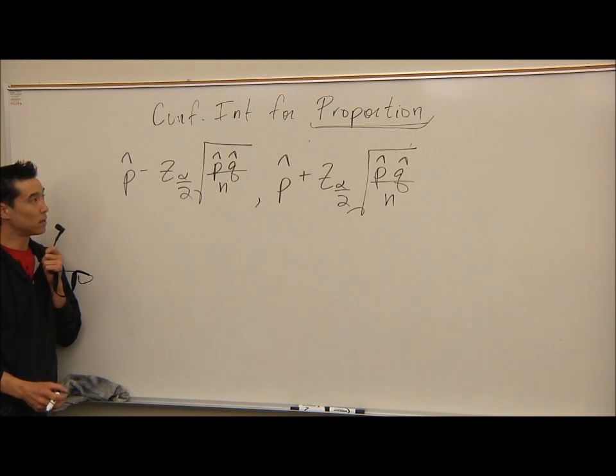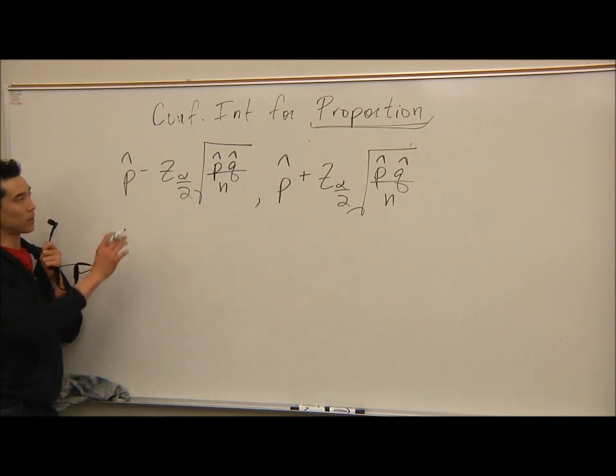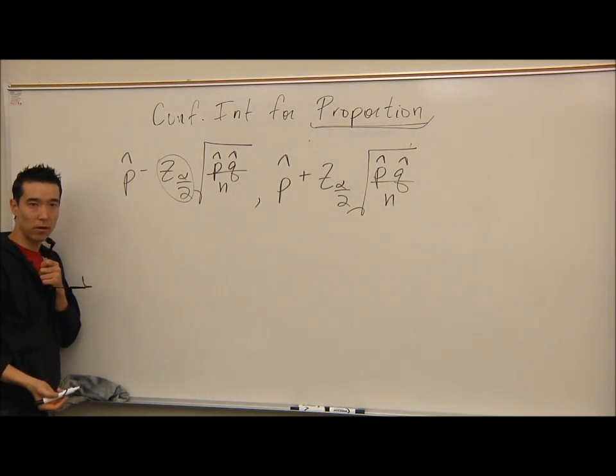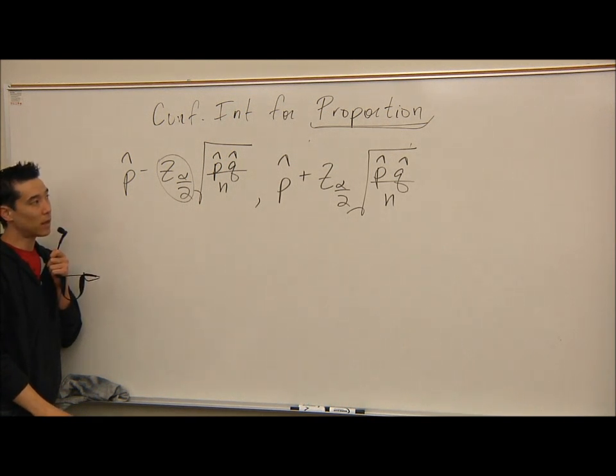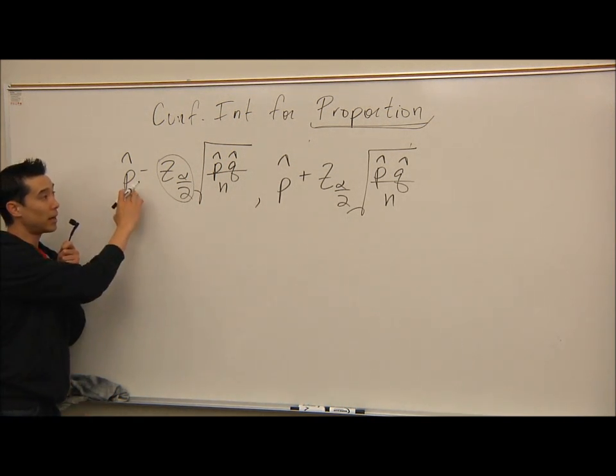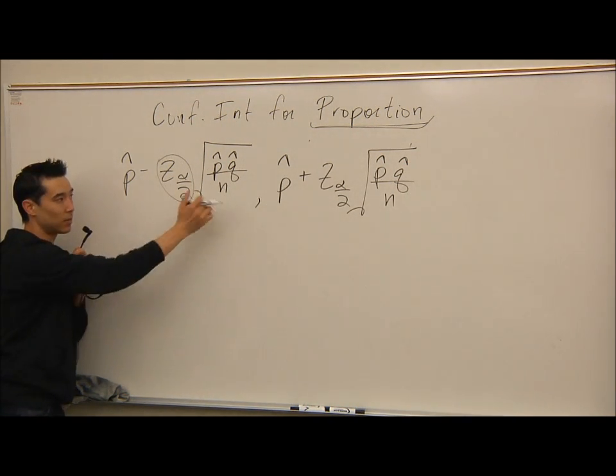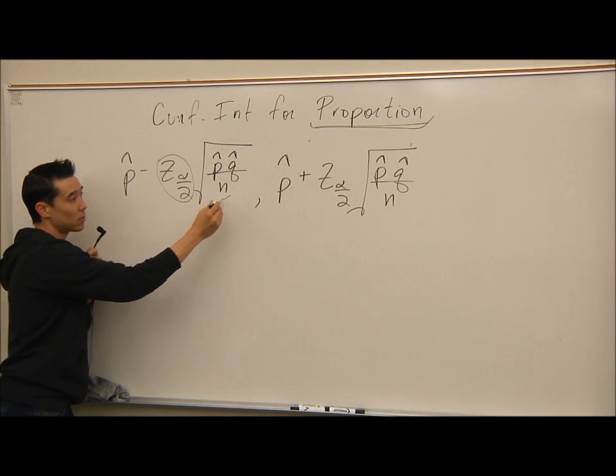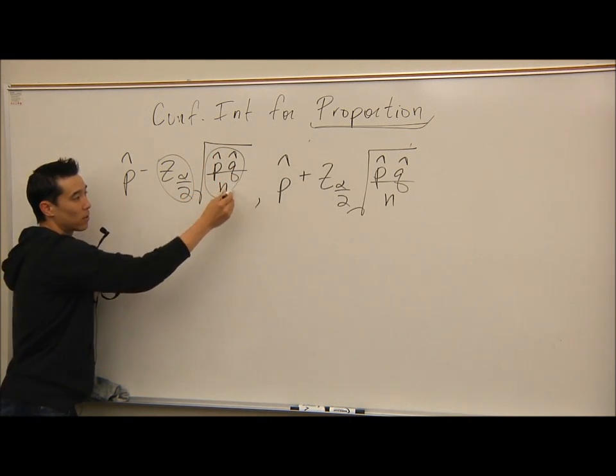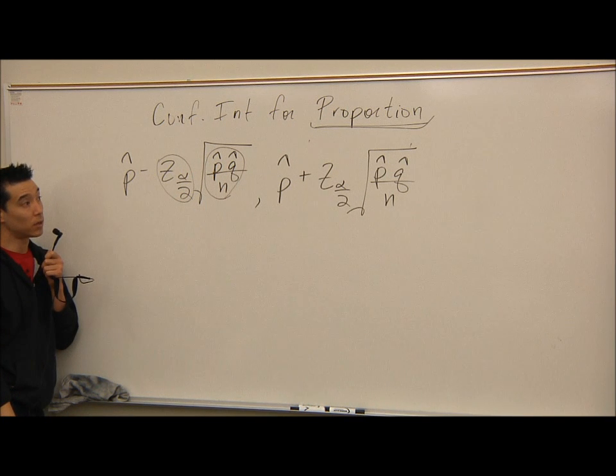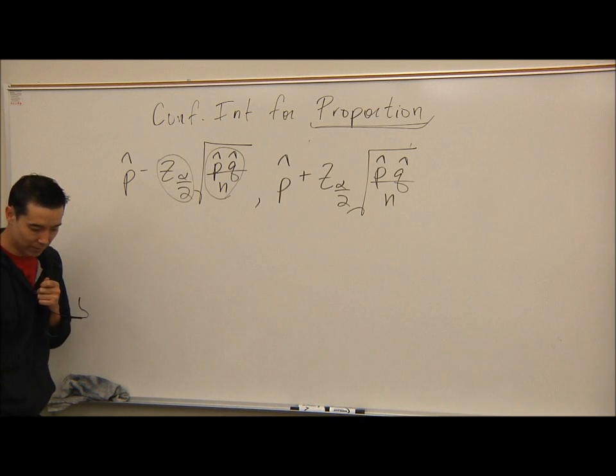We have good news and bad news. Z sub alpha over 2 is familiar to us because we've done that before with confidence interval for the mean. P hat and Q hat are relatively easy to find, and N is sample size. The little bit of bad news is sometimes it's tricky. This whole thing is underneath the square root. You have to be really careful that you have P hat times Q hat all divided by N, all underneath the radical.